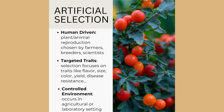The keys to artificial selection are: it is human-driven by farmers, breeders, and scientists who choose which plants or animals to reproduce; there are targeted traits — speaking of tomatoes, selection focuses on traits like flavor, size, color, yield, disease resistance, or growth patterns; and artificial selection occurs in controlled environments like agricultural or laboratory settings rather than in the wild.